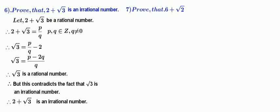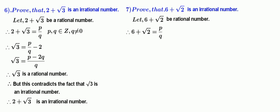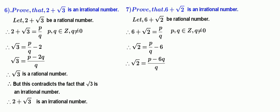Let us take problem number 7: Prove that 6 plus root 2 is an irrational number. Let 6 plus root 2 be a rational number. Therefore, 6 plus root 2 is equal to P by Q, where P, Q belongs to Z and Q is not equal to 0. Therefore, root 2 is equal to P minus 6Q by Q.